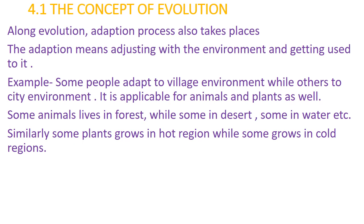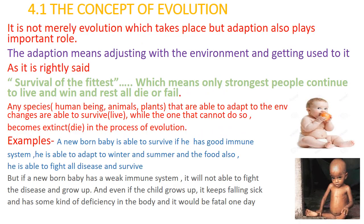For example, some people adapt to a village environment while others adapt to a city environment. This is applicable for animals and plants as well. Some animals live in forests while some live in deserts, some in water, etc. Similarly, some plants grow in hot regions while some grow in cold regions. It is not merely evolution which takes place, but adaptation also plays an important role — adjusting with the environment and getting used to it.